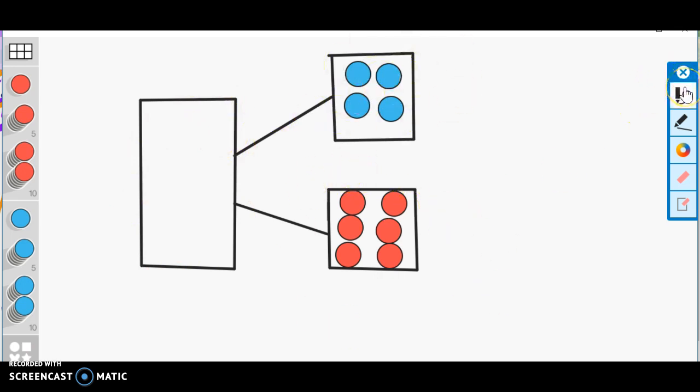If you are subitizing, which means recognizing a group of objects instantly, you will know that this is four and this is six - the same problem that we had at the beginning of this video. It is still parts of the same whole.